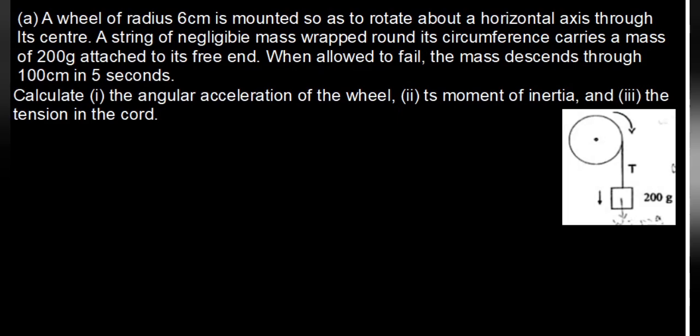The question says: a wheel of radius 6 cm is mounted so as to rotate about the horizontal axis through its center. A string of negligible mass wrapped around its circumference carries a mass of 200 grams attached to its free end. When allowed to fall, the mass descended through 100 cm in 5 seconds. Calculate: (A) the angular acceleration of the wheel, (B) its moment of inertia, (C) the tension in the cord.